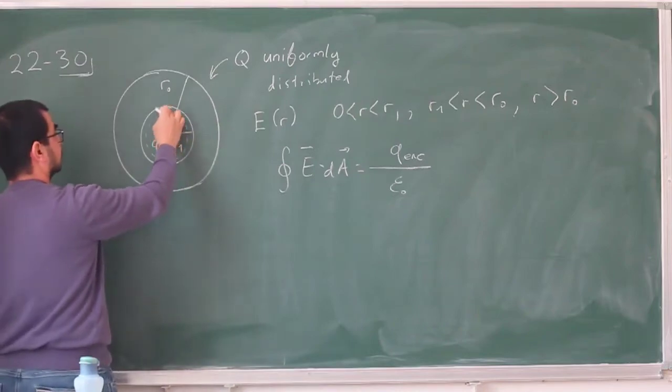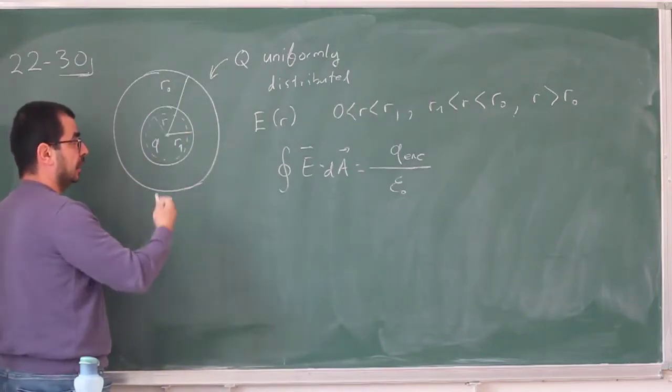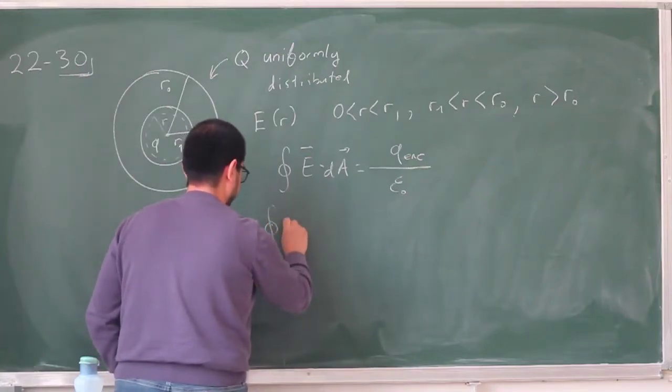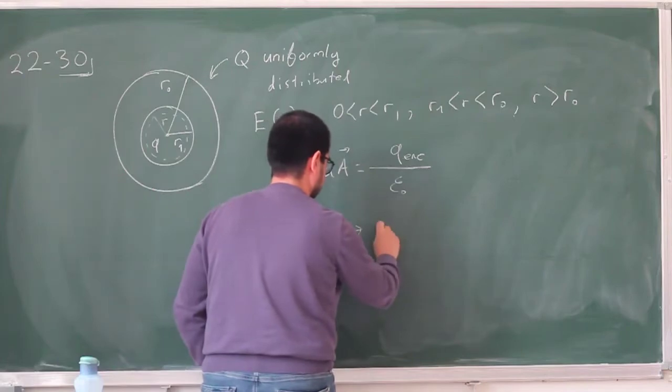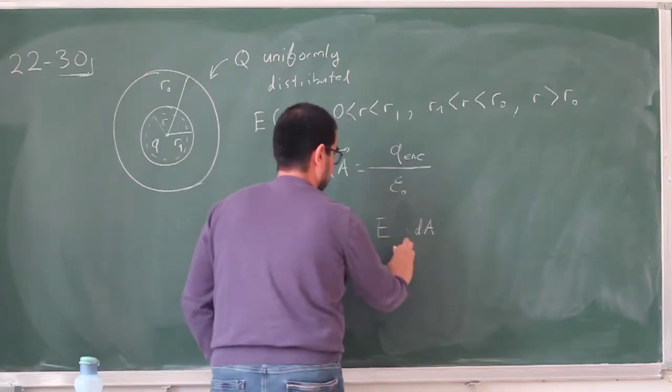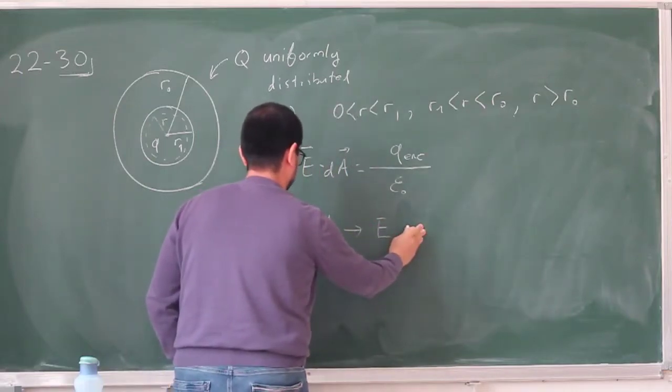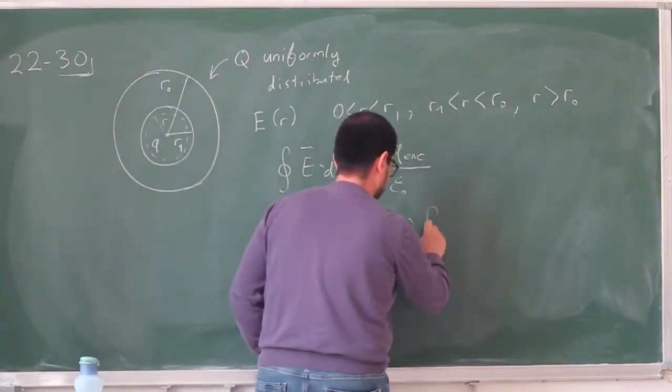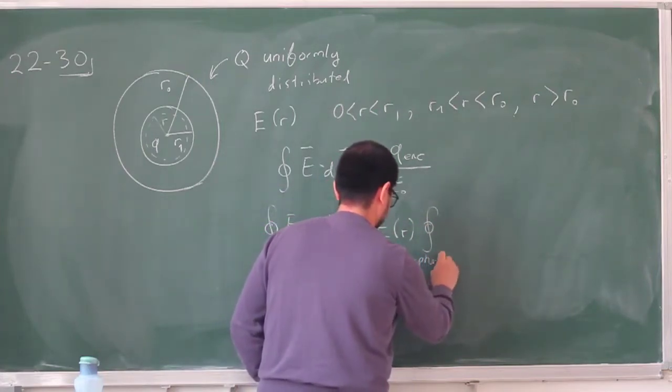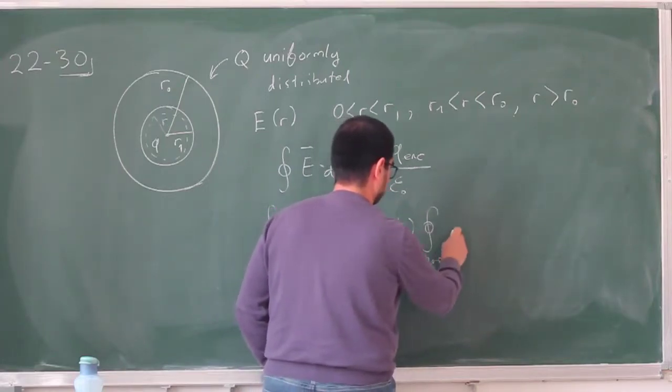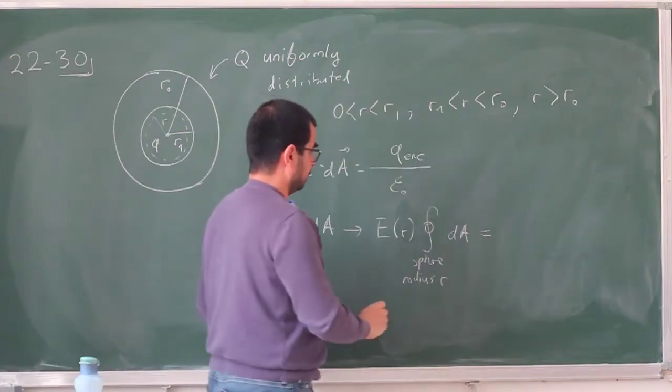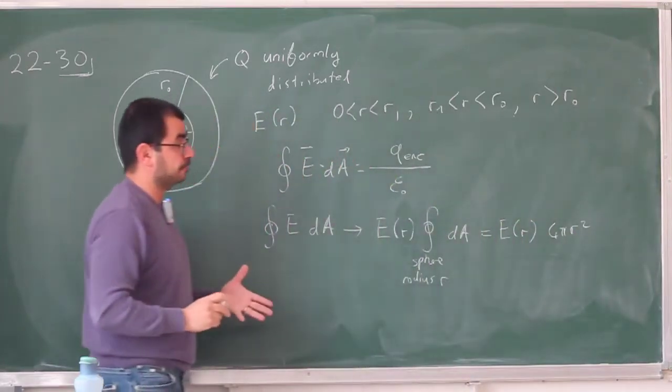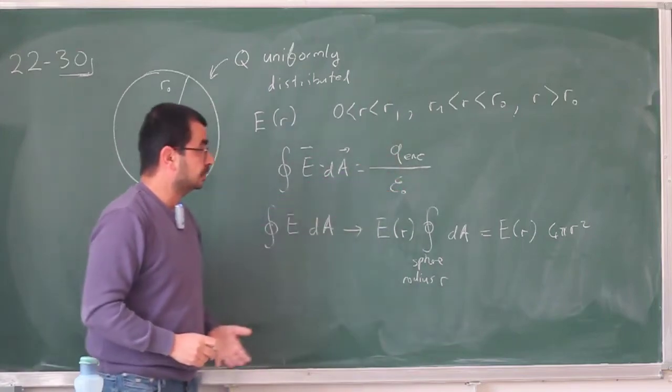So this dot product, because the electric field here is going to be in the radial direction, simply vanishes, it becomes a simple product, and the electric field is of constant strength, I can take this out, and I can write the integral. So this becomes E(r) integral over sphere radius r times dA, and this is going to become E(r) times 4π r squared. And in every case, this is going to be equal to q enclosed divided by epsilon naught.